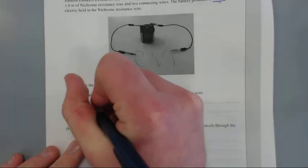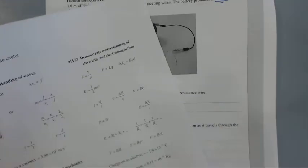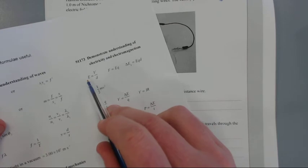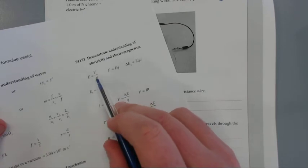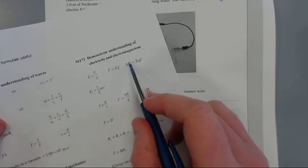That's fairly straightforward. We have on our formula sheet E for electric field is voltage over distance. If it's got a change in E it means it's energy, or EK is kinetic from mechanics.